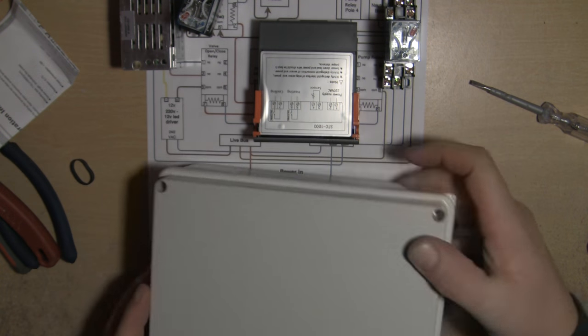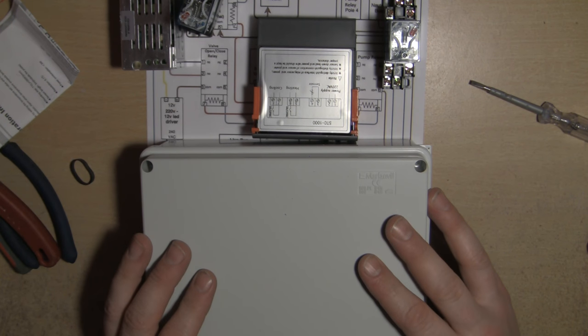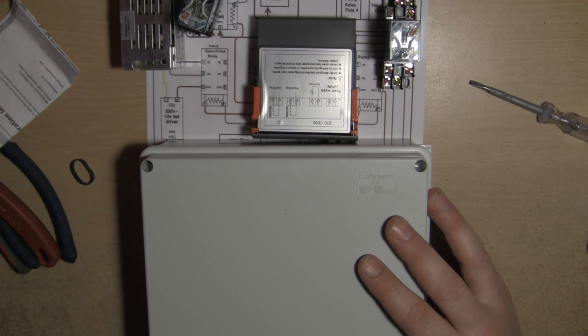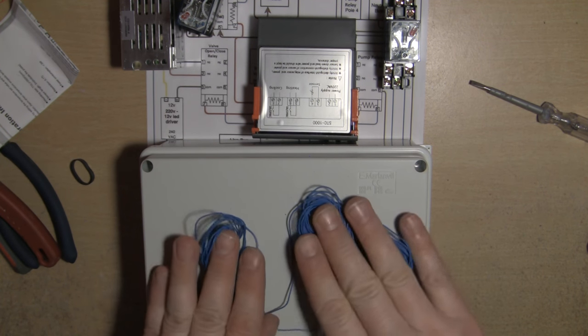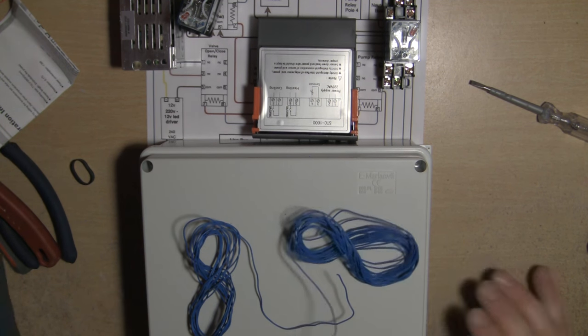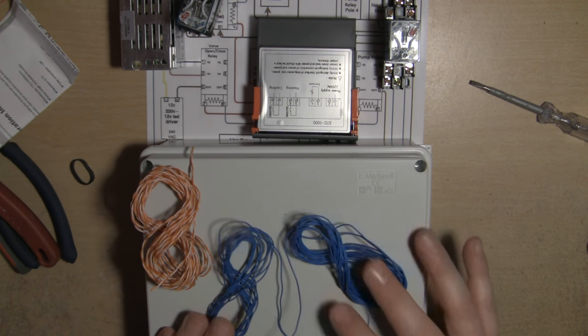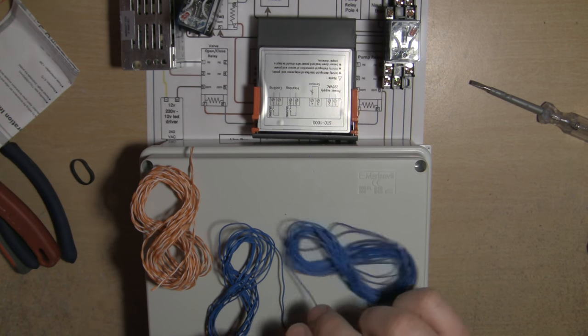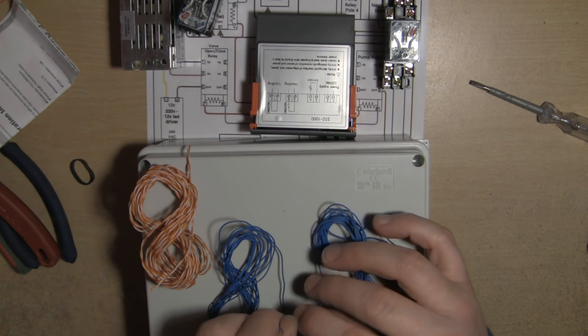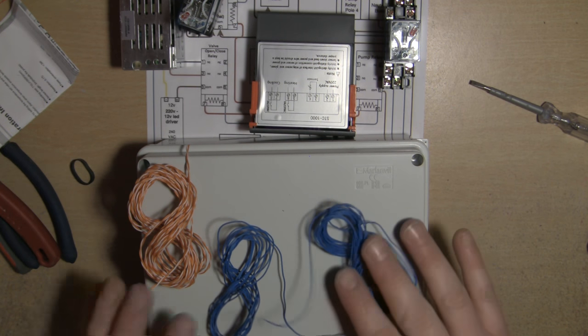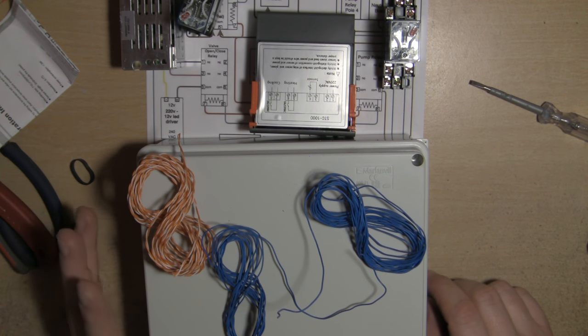Then we're going to need a project box. This particular box is what I've used in the past—it's 190 by 150 millimeters. Everything fits inside and it's snug. I wouldn't go any smaller, would be my advice.